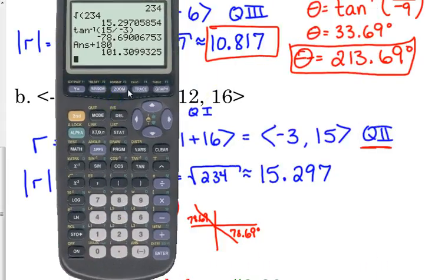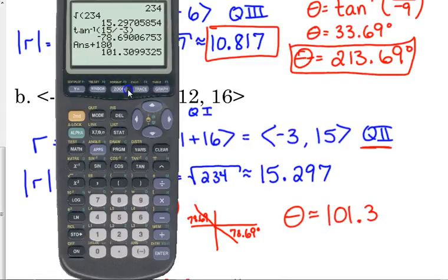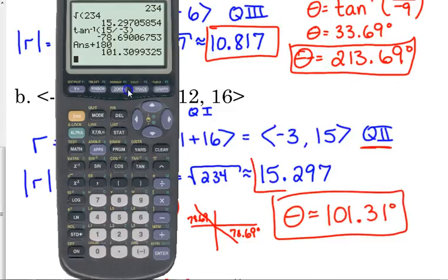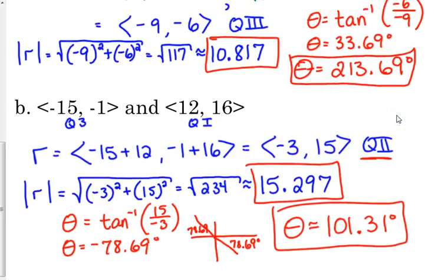So our angle is 101.31 degrees. Always, always, always make sure that your angle is in the correct quadrant.